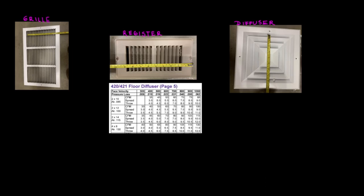Hello, this is Rumberto and this is the HVAC is my channel. Today we're going to be talking about what a grill, register, and diffuser is. These air devices are called the group of GRD — G stands for grill, R for register, and D for diffuser. A grill is mainly applied for returns and is like a plate without a damper. A register is a grill with a damper, and a diffuser is more for commercial applications with 360-degree airflow.